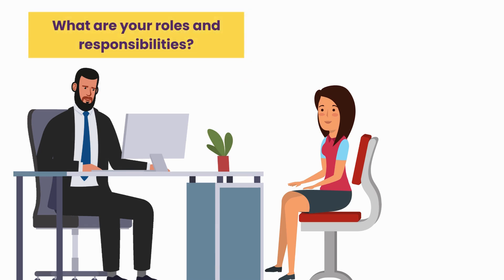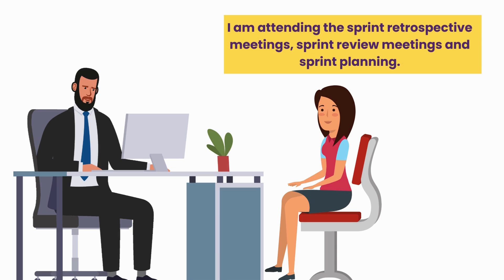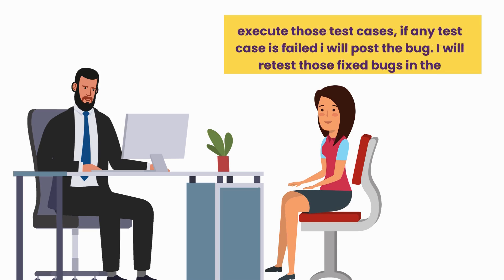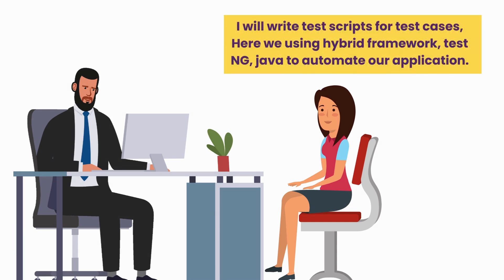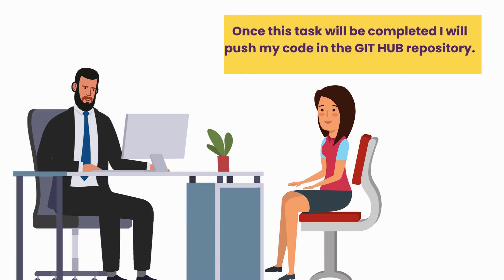What are your roles and responsibilities? We are following the Agile methodology Scrum process. We have two-week sprints. I attend the Sprint retrospective meetings, Sprint review meetings, and Sprint planning. Daily we have scrum calls to update our status. When I get a user story, I write test cases and execute them. If any test cases fail, I post the bug and re-test the fixed bugs in the next build. If required, I go for regression testing, then automation testing. I write test scripts using a hybrid framework with TestNG and Java. Once the task is completed, I push my code to the GitHub repository.